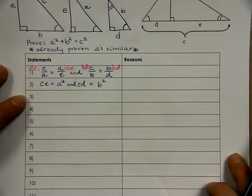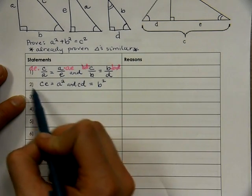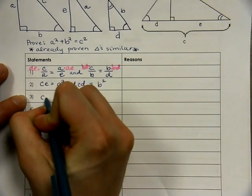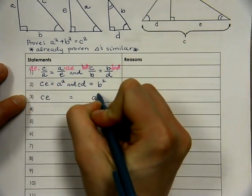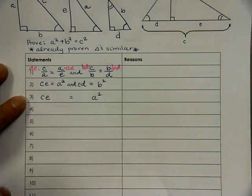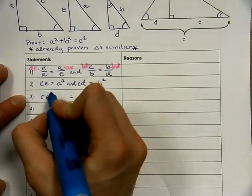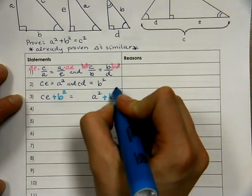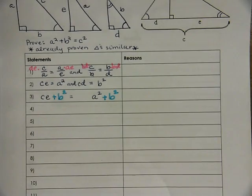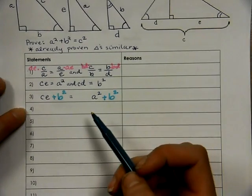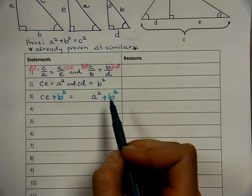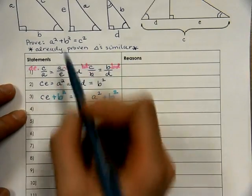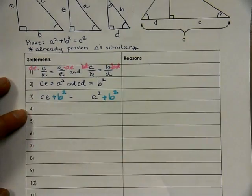So then, from there, we are going to take this equation, and we are going to add B squared to both sides. So, if we have CE equals A squared, we are going to add B squared to both sides. Now, we have A squared plus B squared, which is great, because that's what we want. Well, we at least want that on one side. Over here, we somehow need to get this to look like C squared.